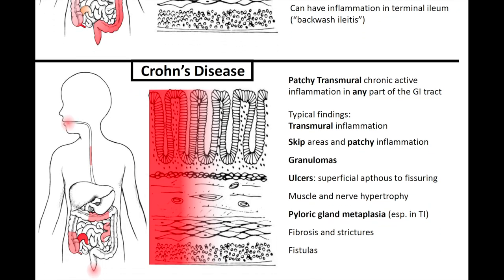Crohn's disease involves patchy, transmural, chronic active inflammation that can occur in any part of the GI tract. You can contrast that with ulcerative colitis, which has diffuse and continuous involvement. Typical findings in Crohn's include transmural inflammation, skip areas, patchy inflammation, and classically granulomas. You can also see granulomas in ulcerative colitis — such as crypt rupture granulomas — however, granulomas are more classically associated with Crohn's disease under the microscope.